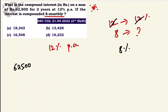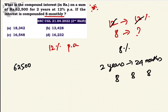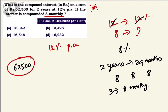Principal Rs.62,500. Rate of interest 8%, compounding 3 times. Each period: 62,500 at 8% is calculated year by year for 3 periods.